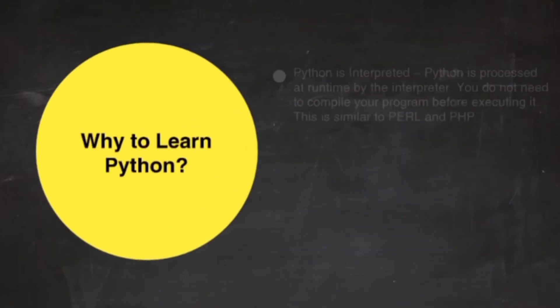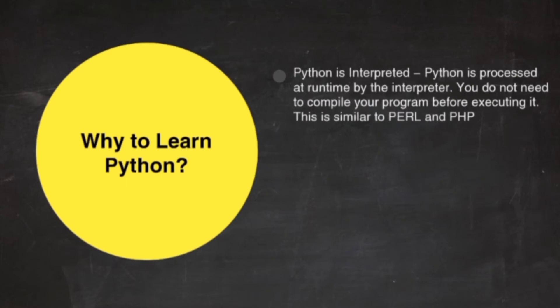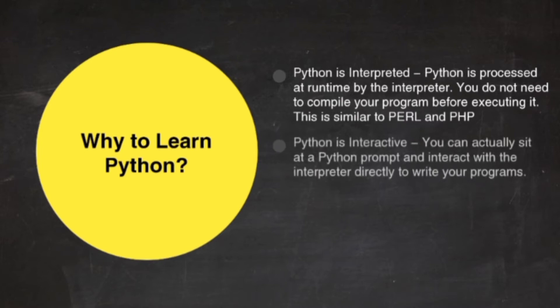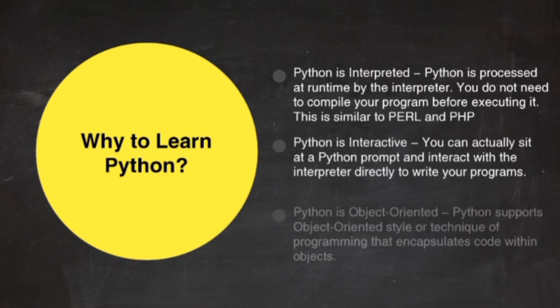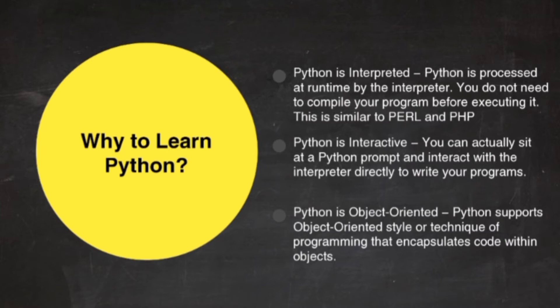Key advantages of learning Python. Python is interpreted — it is processed at runtime by the interpreter. You do not need to compile your program before executing it; this is similar to Perl and PHP. Python is interactive — you can actually sit at a Python prompt and interact with the interpreter directly to write your programs. Python is object oriented — it supports object oriented style or technique of programming that encapsulates code within objects.